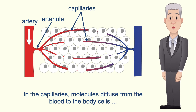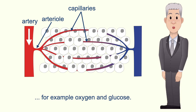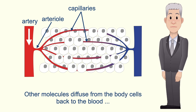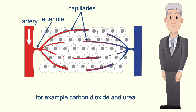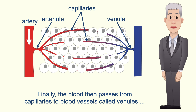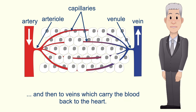In the capillaries, molecules diffuse from the blood to the body cells — for example oxygen and glucose. Other molecules diffuse from the body cells back to the blood, for example carbon dioxide and urea. Finally, blood passes from capillaries to blood vessels called venules and then to veins, which carry the blood back to the heart.